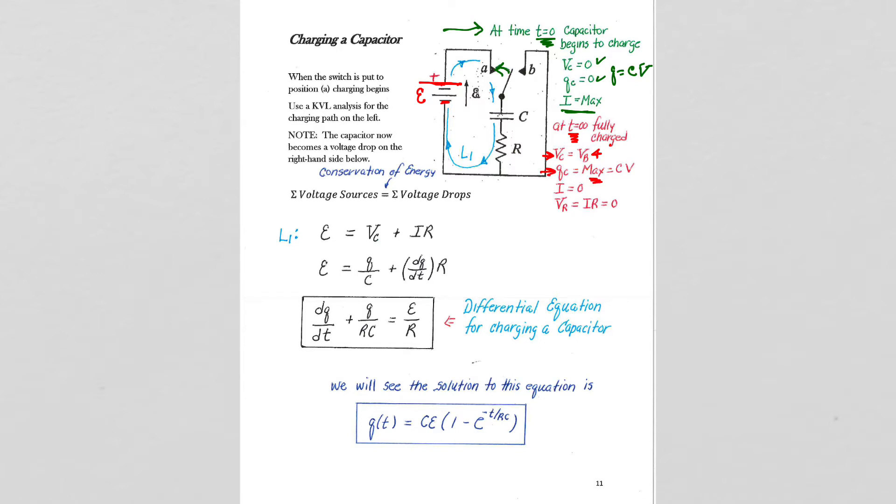No current is flowing at this point. So in that branch of the circuit the current is zero because the back voltage has shut it off, and the voltage across the resistor is now zero.